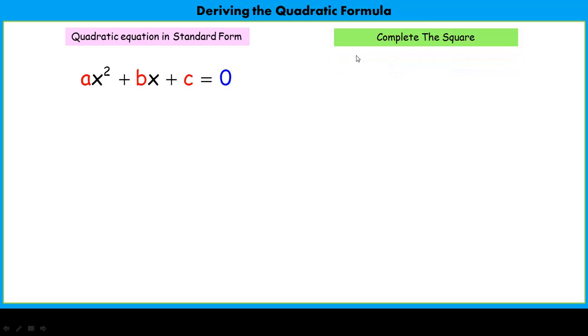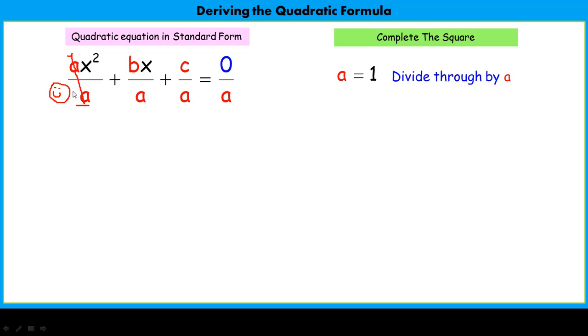First thing we're going to do is complete the square. In completing the square, the most important thing to start with is that we need to have the quadratic coefficient, or the leading coefficient, equal to one. Our first step is getting that to be one, and we do that by dividing the entire equation by a. Every single term is divided by a. Zero divided by a maintains zero. We're doing this because this a over a simplifies to one. We now have our form and we're ready to start the process of completing the square.